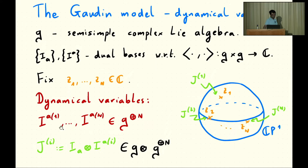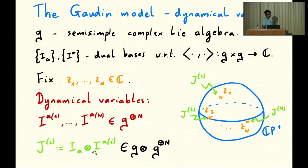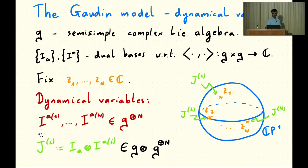These are the abstract Lie algebra generators which you should think of as dynamical variables in the Gaudin model. The algebra of observables of the Gaudin model is symmetric polynomials in the Lie algebra G direct sum N. It's convenient to package all these dynamical variables into a matrix — taking the tensor product with the dual basis elements — so in GL_N you have a matrix. These are just the abstract generators of the Lie algebras at each site, packaged together in the form of a matrix.